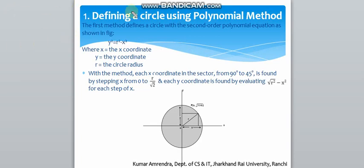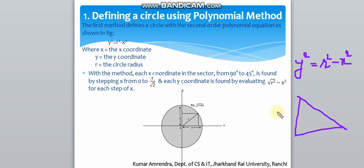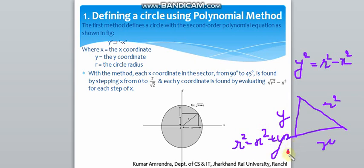So the first one is defining a circle using the polynomial method. The polynomial equation is y² = r² - x². This is based on the Pythagorean theorem, where r² = x² + y², so y² = r² - x². The first method defines a circle with this second-order polynomial equation.